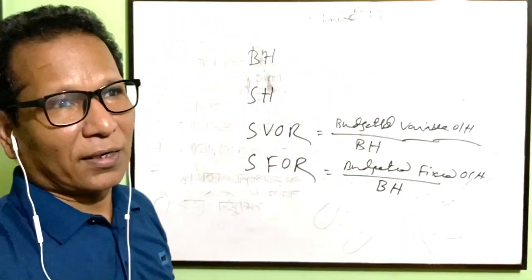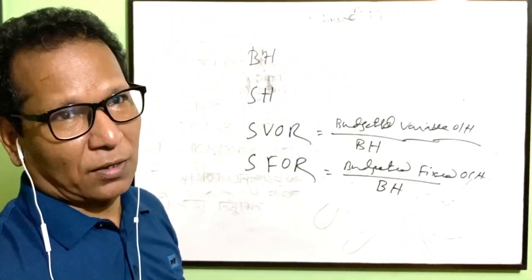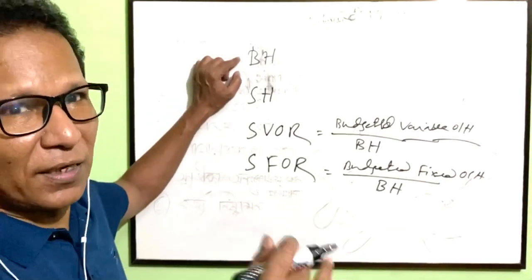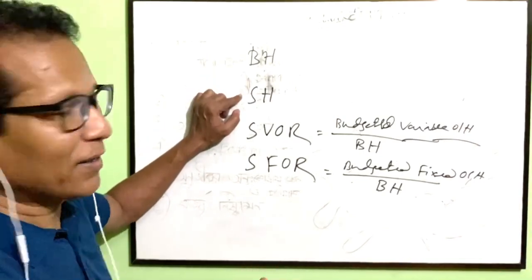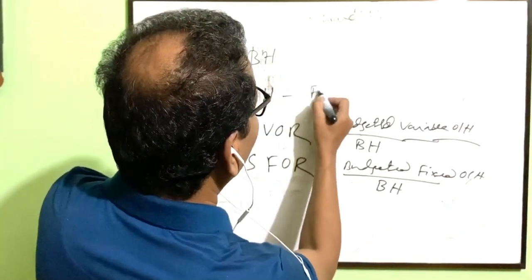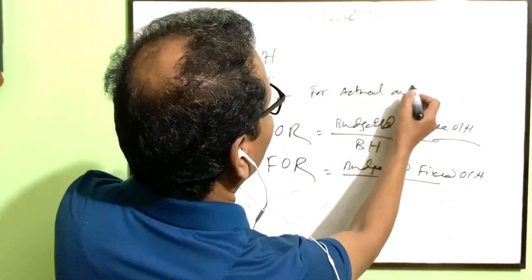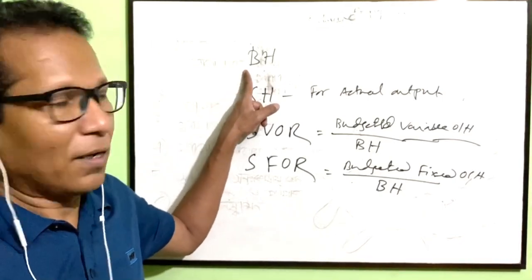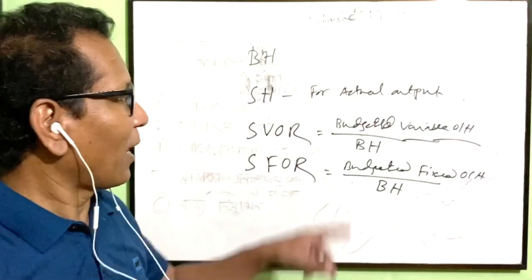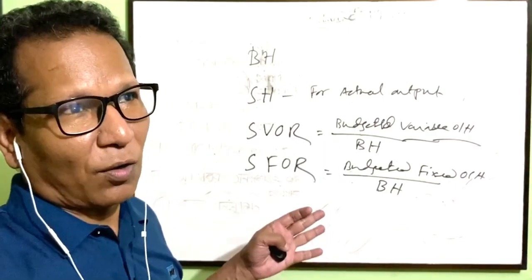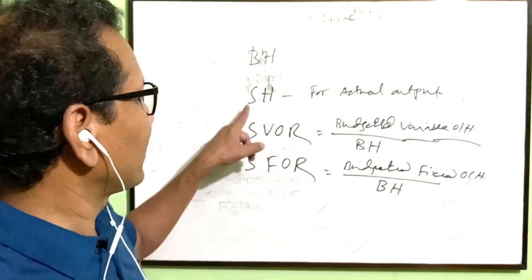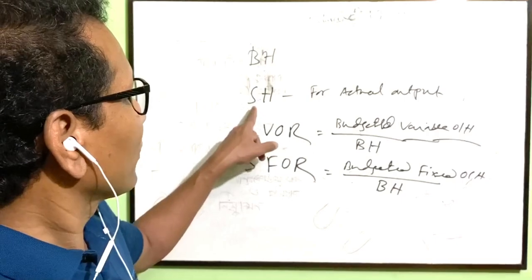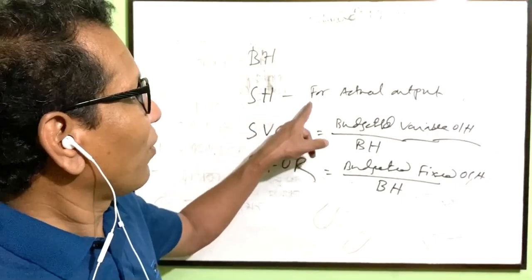Budgeted hour is based on normal capacity of a plant, or it is a predetermined budget. Standard hour is a different thing — standard hour is for actual output. So budgeted hour is for normal capacity, while standard hour is for actual output. On the basis of actual output, standard hour is calculated to apply overhead — it is the hour allowed for actual output.